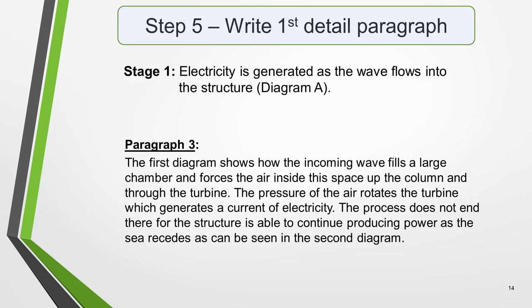Paragraphs 3 and 4 of your process diagram essay are where you include more detailed information. In paragraph 3, you should explain the first key feature in more detail. For this question, we will expand on the first stage of the process. Here it is again. Stage 1: Electricity is generated as the wave flows into the structure. And this is an example of what you could write. The first diagram shows how the incoming wave fills a large chamber and forces the air inside this space up the column and through the turbine. The pressure of the air rotates the turbine, which generates a current of electricity. The process does not end there, for the structure is able to continue producing power as the sea recedes, as can be seen in the second diagram.